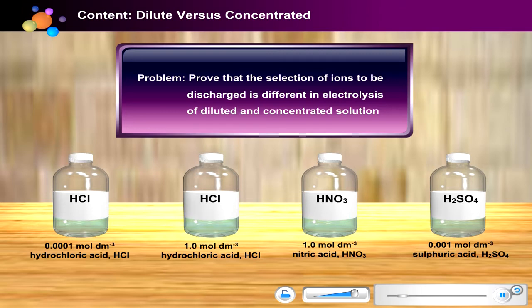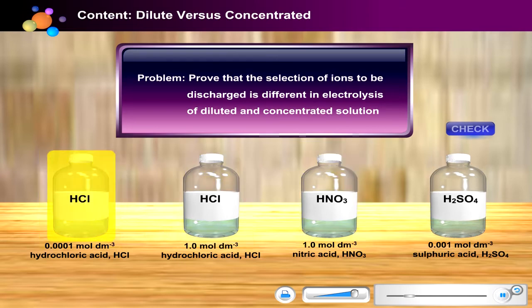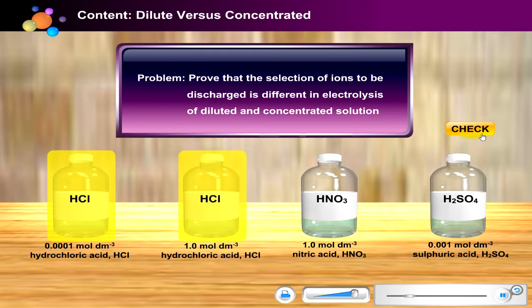Now, are you ready for the virtual experiment? Here are four bottles of acid. Which two of these acids will be used to solve this problem? Click on two bottles of your choice and press check. To solve this problem, the type of acid used has to be kept constant, but you need to manipulate its concentration. So, you need to use 0.0001 mol/dm³ and 1.0 mol/dm³ of hydrochloric acid.